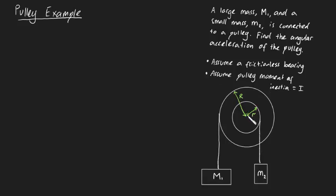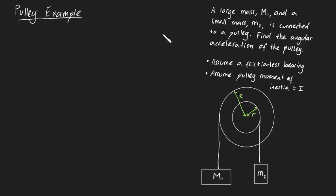We're going to assume a frictionless bearing, which means we don't need to worry about resistance, counter-torques, or anything like that. We're going to keep this problem as simple as we can. We're also going to assume the moment of inertia about the pin of the pulley is equal to I. Without further ado, let me get started on this problem by drawing a free body diagram.